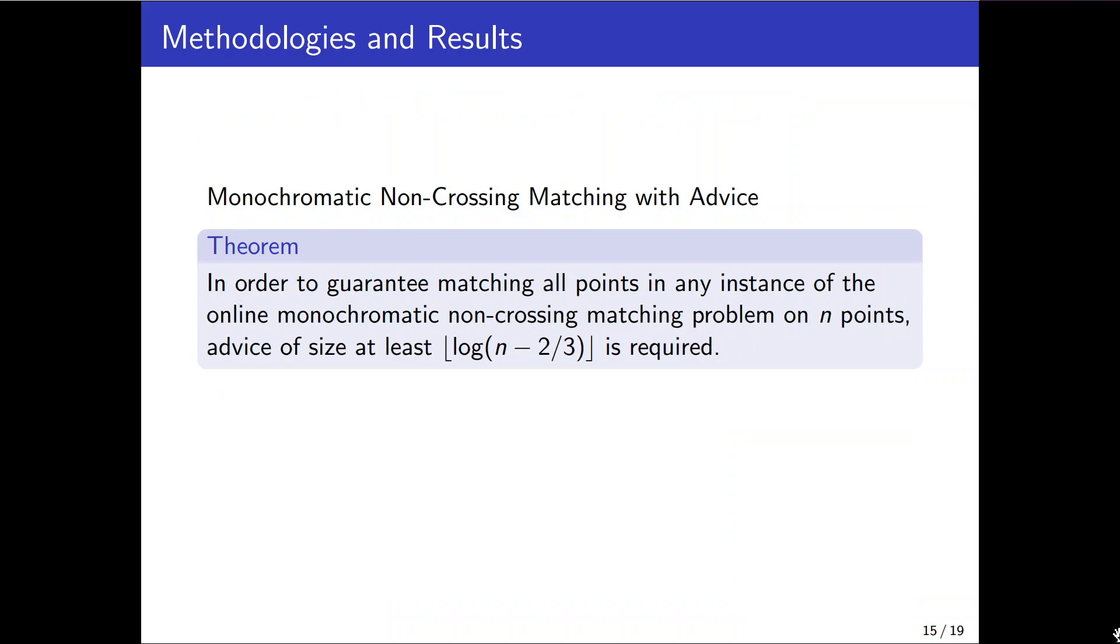And besides we proved that the logarithmic number of bits of advice is required for perfect matching. In monochromatic case we skip the details here of the proof but here are some highlights. Assume all points are generated on a circle. Also we can define a family of sequences which all share perfects and only less two points of them are different. Then we proved there is no three sequences that can receive the same advice.